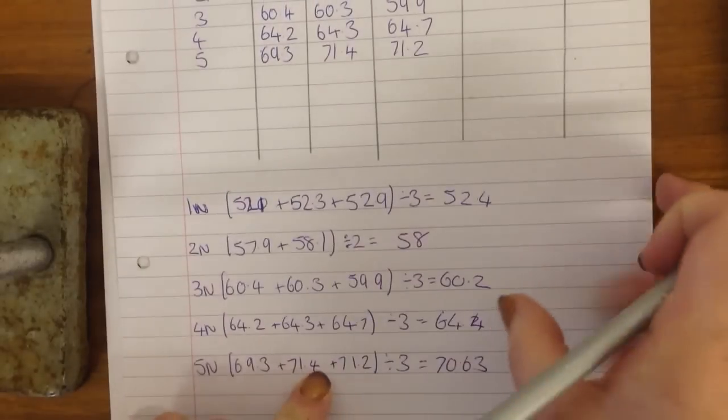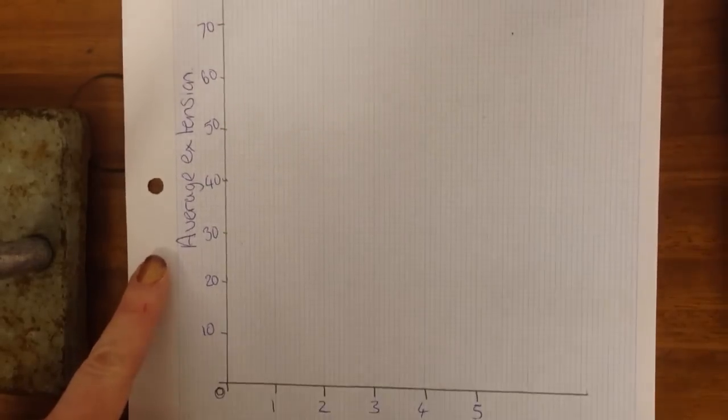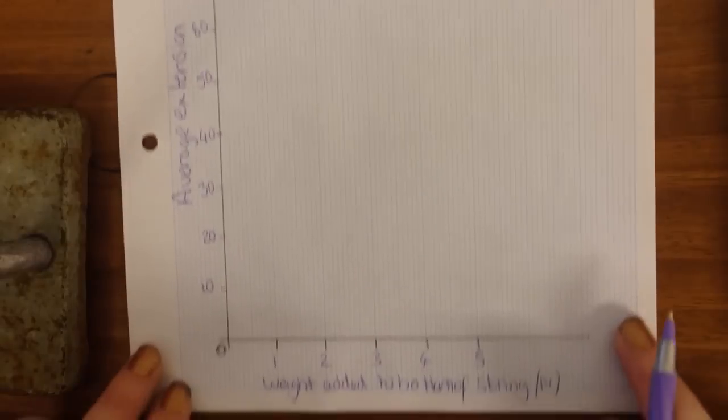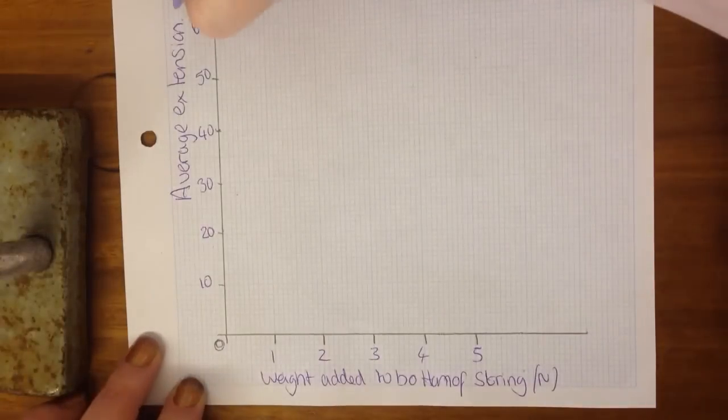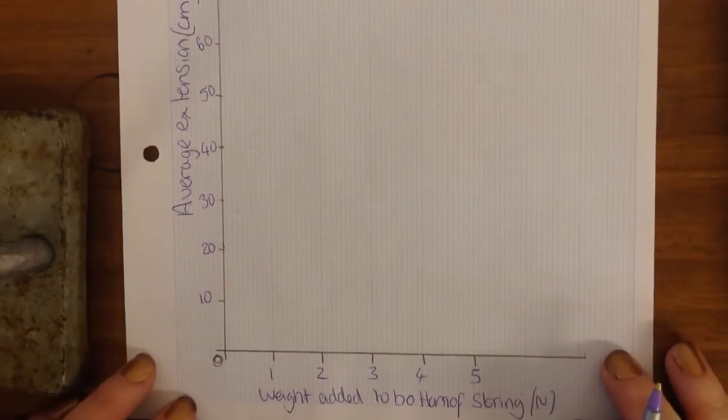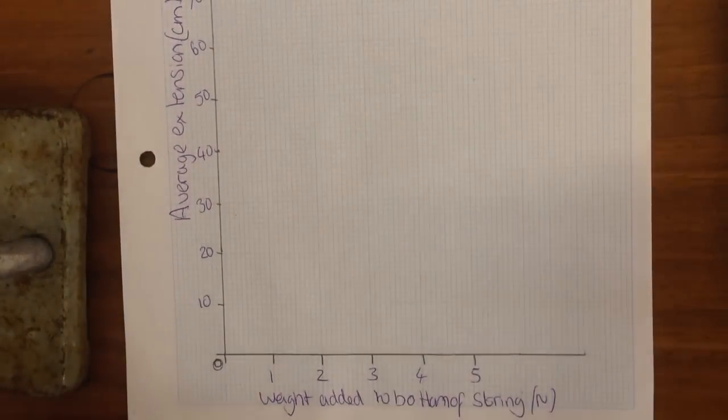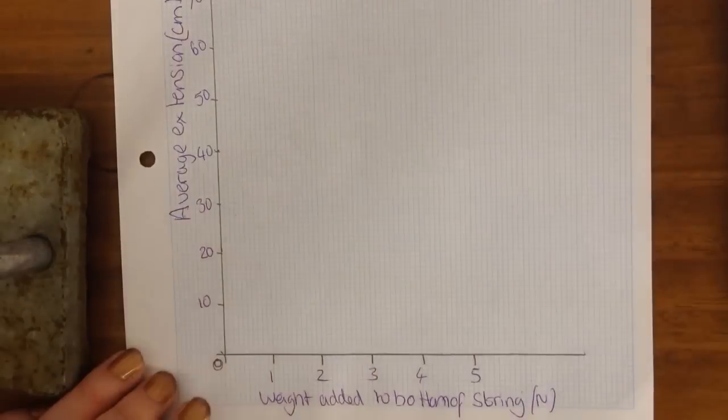I'm going to draw the graph of what happens. So this is my graph. I have my axes labeled, oh dear, centimeters. You can see that my descriptions are fairly descriptive. So this isn't just weight, it's weight added to the bottom of the spring.